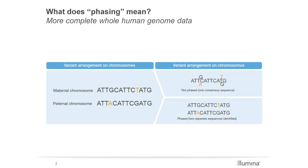So what does phasing mean? Human genomes are diploid, with half the homologous chromosomes being derived from each parent. Where variants occur on each chromosome can significantly impact the expression and regulation of genes. The most cost-effective and efficient way of producing whole human sequence data has been by targeting short fragments and producing short read sequence data, aligning those to a reference genome, and then comparing the genome in question to the reference genome to identify heterozygous or homozygous variants that differ from the reference.